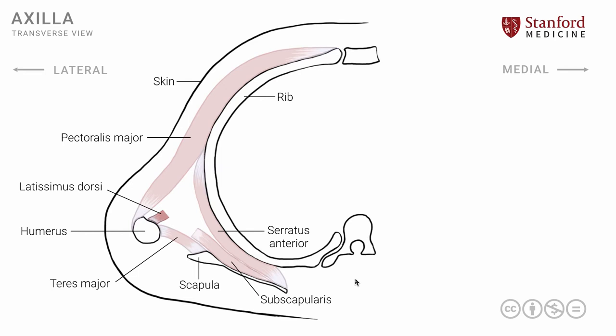Now, there are some important structures contained within this roughly triangular cross-sectional space. The first is the axillary artery, which continues from the root of the neck, traverses the axilla, and then enters into the arm, providing several branches in this region before continuing down the upper limb. Very closely related to this, and just anterior to the axillary artery, is the axillary vein, represented here in blue.